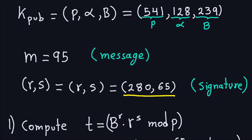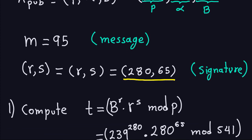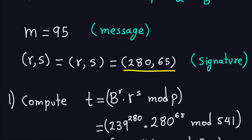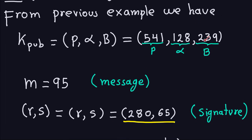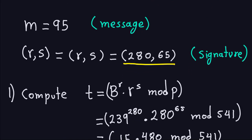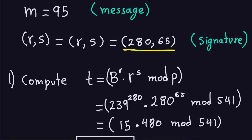The verification process is done by Alice. As we mentioned in the algorithm, it's computing B to the R times R to the S, modulo P. B here is part of the public key, which is 239. So I'm going to have 239 to the R, but R here is 280, times 280 to the 65, because that's S, and this is all modulo the prime number, which is 541.